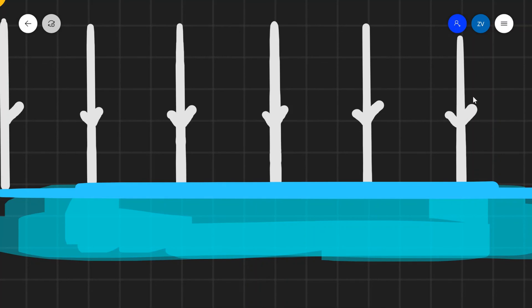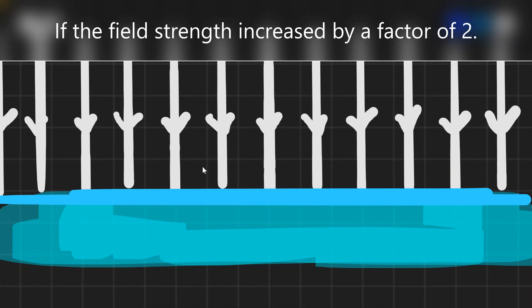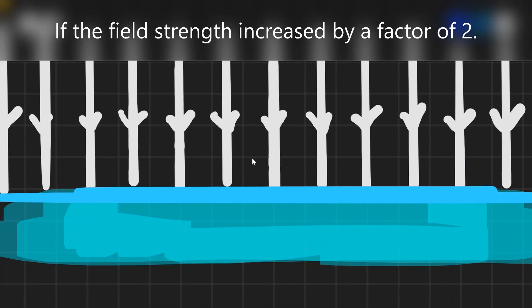If we were to double the field strength, we would have to double the amount of field lines. This is how the field lines would look if I doubled the strength of the gravitational field. We had six lines before, whereas now we have twelve.